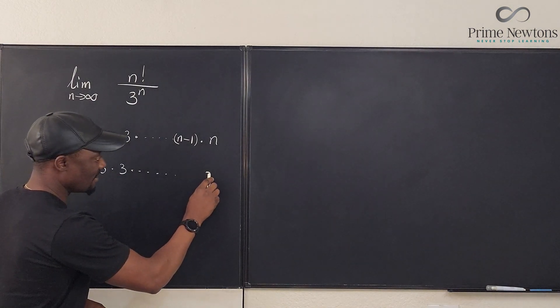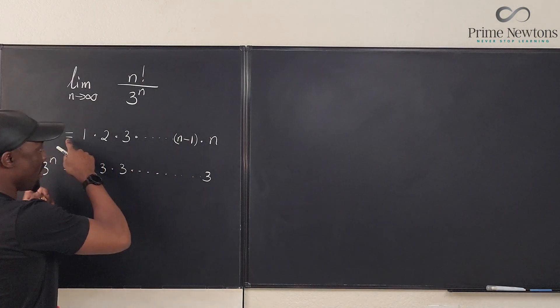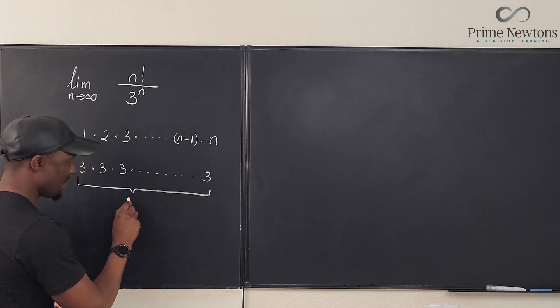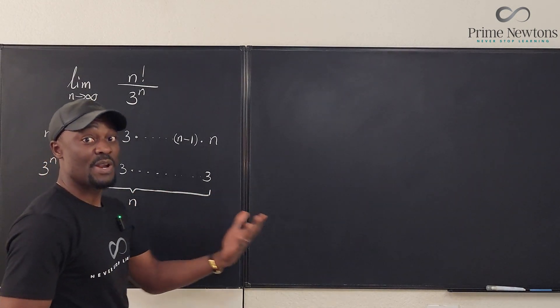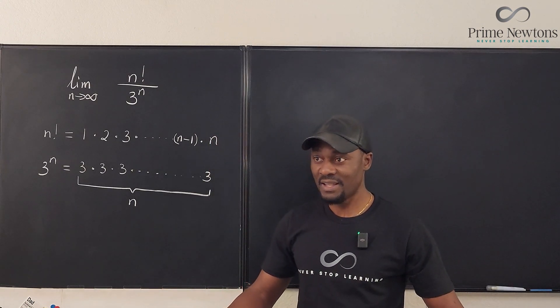So at the end of the day, we're going to have a 3 here. So you're going to have as many 3s, but the number of 3s you have is going to be n of them. There's going to be n 3s. That's 3 raised to power n. Multiply 3 by itself n times.